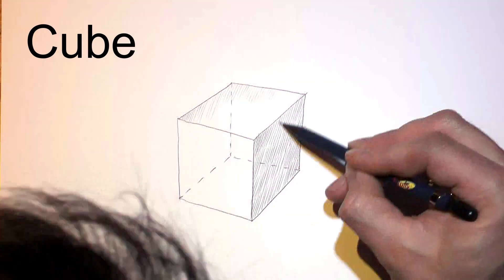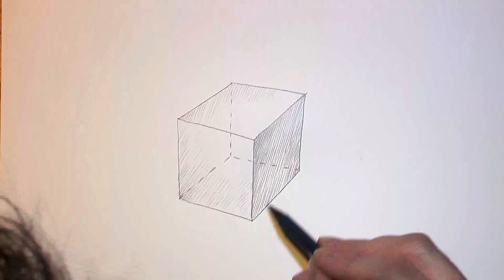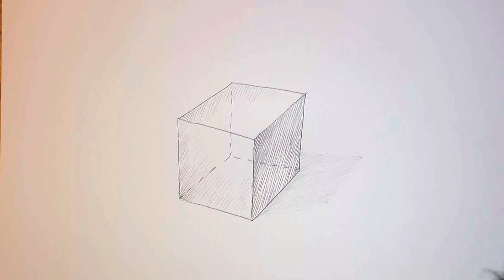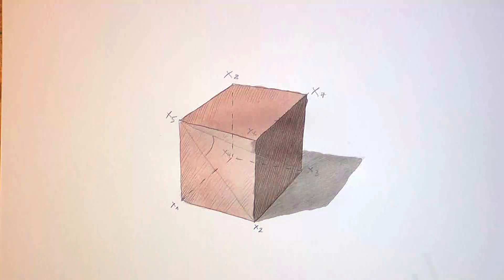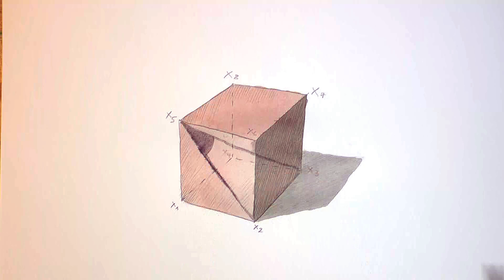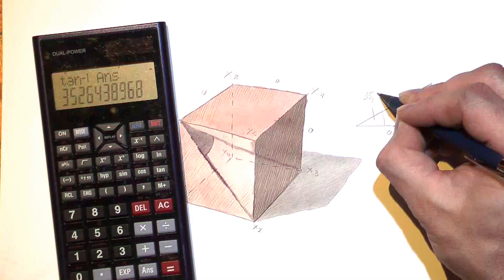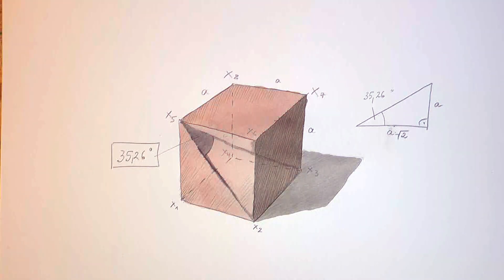Now we will have to make a cube. A really difficult thing. But luckily it's possible to calculate the angle between the faces and the space diagonals. It's 35.3 degrees.